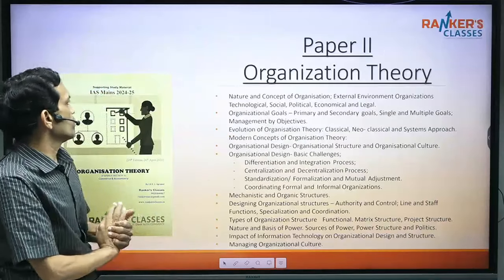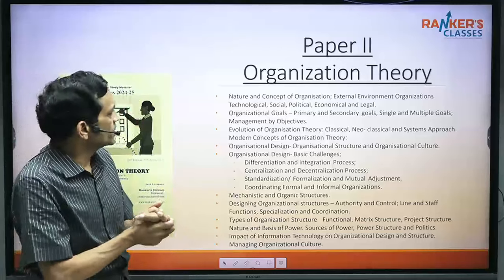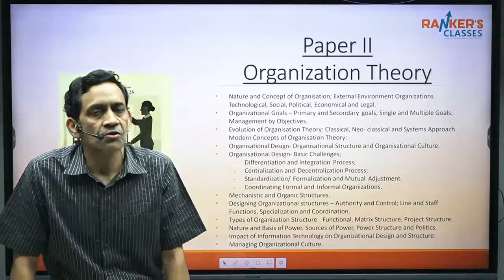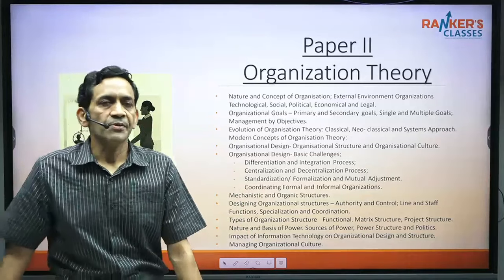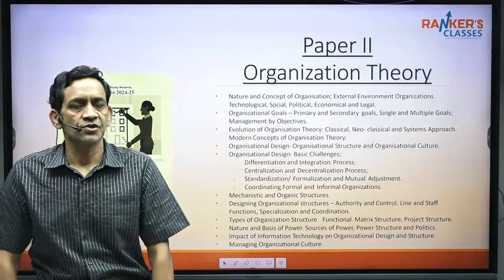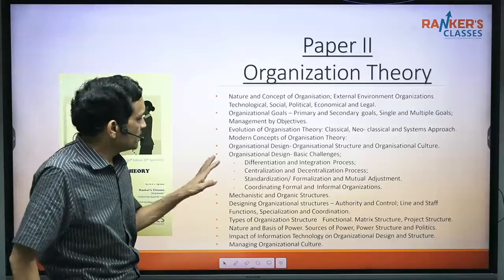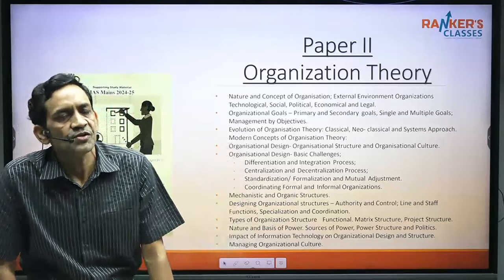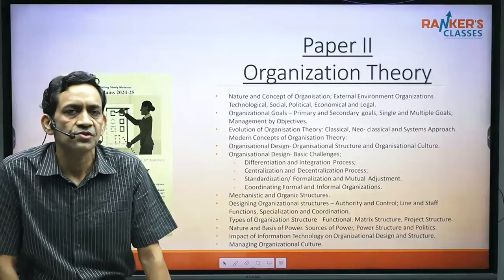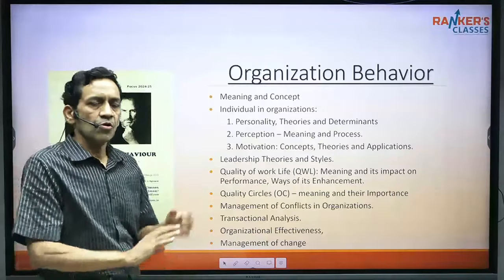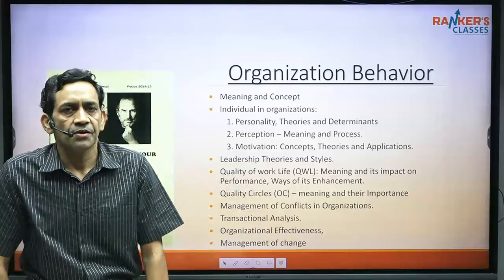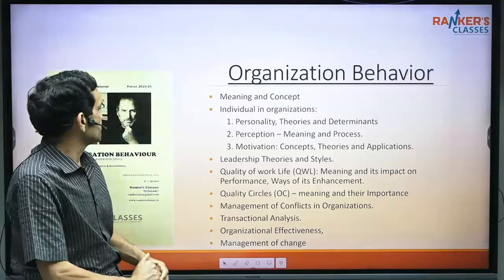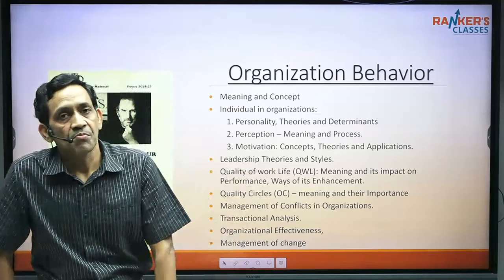Paper 2 begins with Section A: Organization Theory. Chapters are divided into three parts — what is an organization, why organizations exist, and how to manage them well — similar in nature to Plus Two Business Studies. Next is Organizational Behavior, with 8 chapters covering meaning and concept, personality, perception, quality of work life, leadership, motivation, etc.